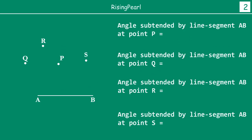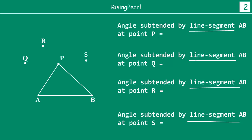Now let's expand on this concept. Here we have drawn the same line AB and instead of one point, I have taken multiple points: P, Q, R, S. We want to find out the angle subtended by the same line segment AB at each of these points. The same line segment AB is subtending different angles at each point. The angle subtended at point P will be angle APB. The angle subtended at point Q will be angle AQB.